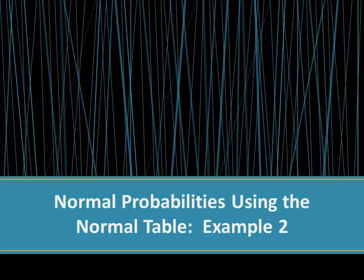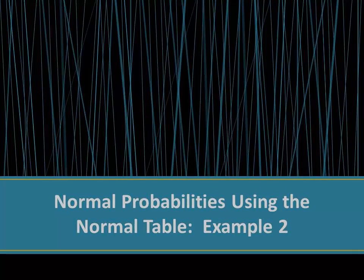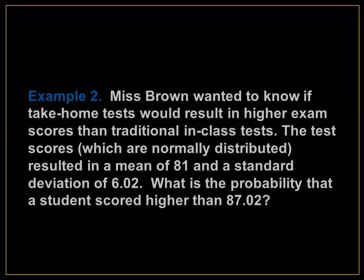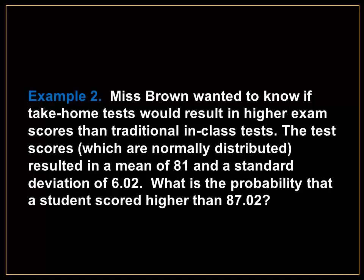Finding Probabilities Using the Normal Table. For example, Ms. Brown wanted to know if take-home tests would result in higher exam scores than traditional in-class tests. The test scores resulted in a mean of 81 and a standard deviation of 6.02. What is the probability that a student scored higher than 87.02?